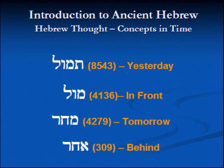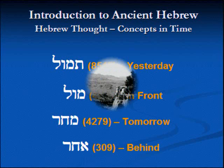Why is that? It's actually very simple. Because you know the past — the past is laid out in front of you; you know it, it's there for you to see. Can you see the future? The future you cannot see. The prophets could — they had a special gift — but on average we cannot see it. The future is behind you because you cannot see it. This is one area where Hebrew thinking is 180 degrees from Greek or Greco-Roman thinking.